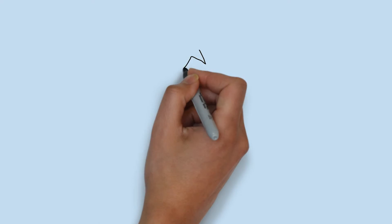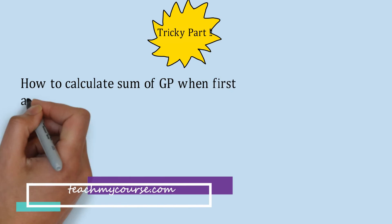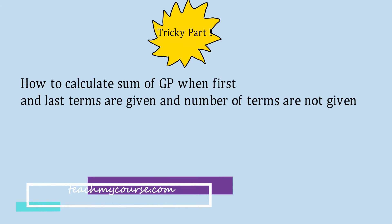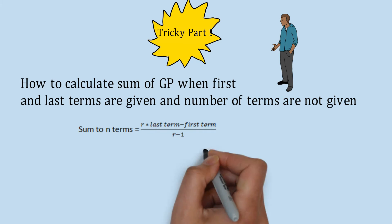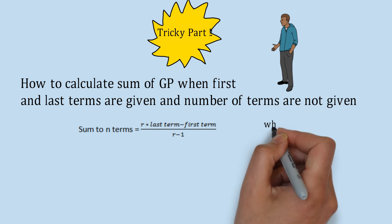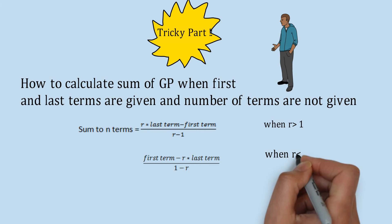Now let's tackle some tricky questions. Suppose we need to calculate the sum of a GP but only the first and last terms are given — the number of terms N is not given. This can be confusing in competitive exams. The formula for this case is: Sn = (R × last term − first term) / (R − 1) when R > 1, and Sn = (first term − R × last term) / (1 − R) when R < 1. Please pause and memorize this formula.